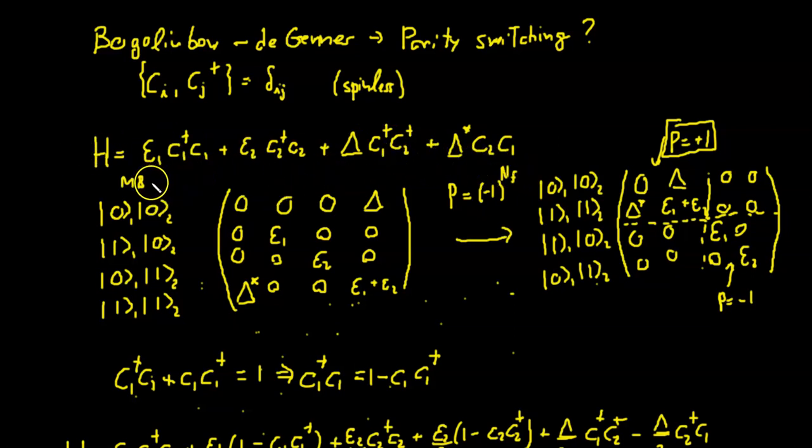And we wrote the many-body form in terms of number occupation, the basis of number occupation, zero zero one zero so one.